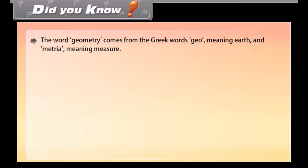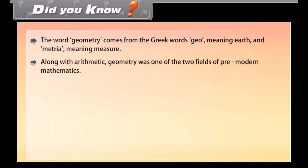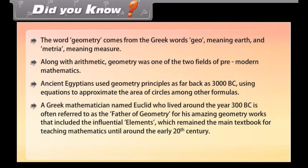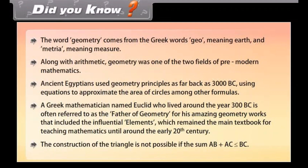Did you know? The word geometry comes from the Greek words 'geo' meaning earth and 'metre' meaning measure. Along with arithmetic, geometry was one of the two fields of pre-modern mathematics. Ancient Egyptians used geometry principles as far back as 3000 BC, using equations to approximate the area of circles among other formulas. A Greek mathematician named Euclid, who lived around 300 BC, is often referred to as the father of geometry for his influential work 'Elements', which remained the main textbook for teaching mathematics until the early 20th century. Note: the construction of a triangle is not possible if the sum AB plus AC is less than or equal to BC.